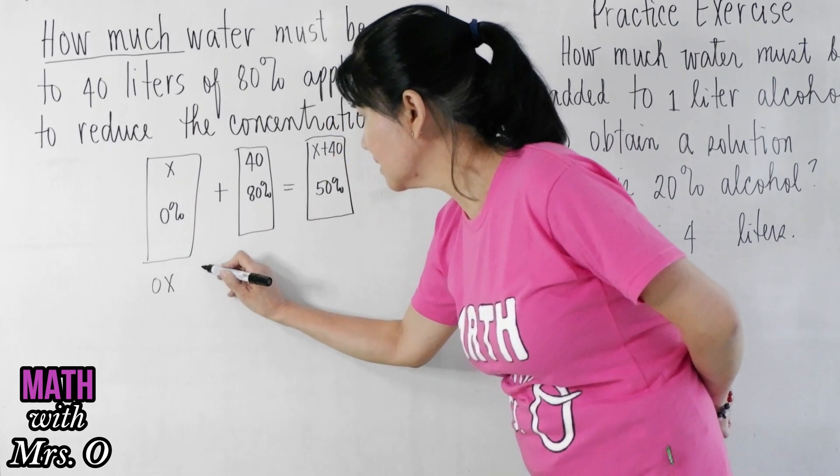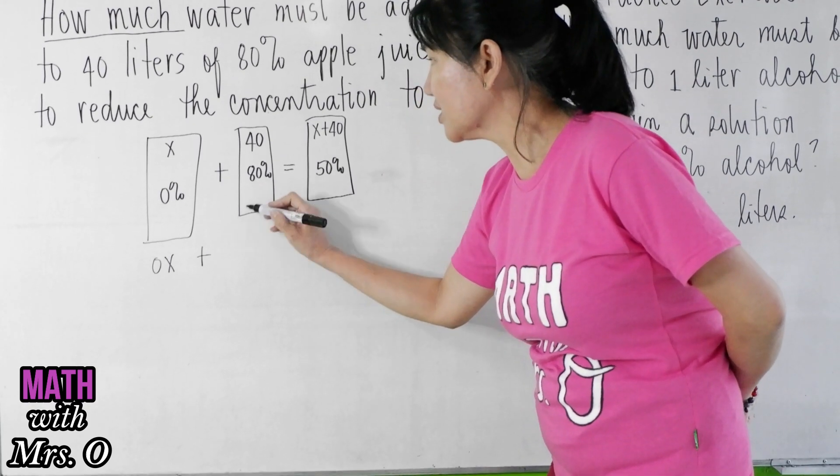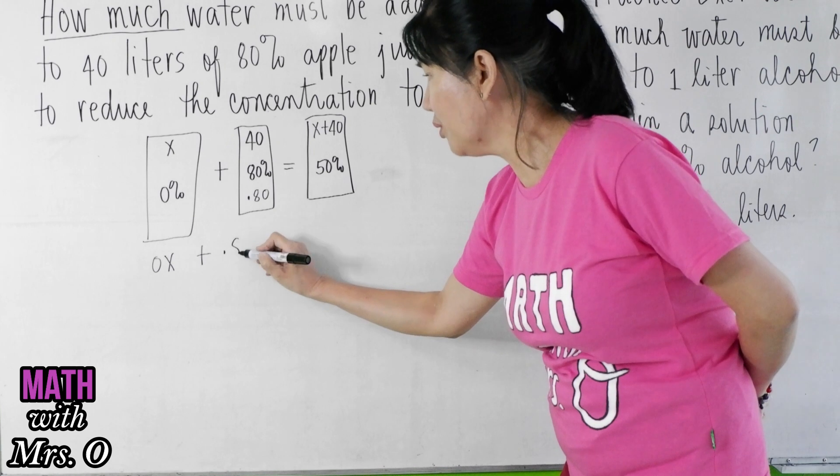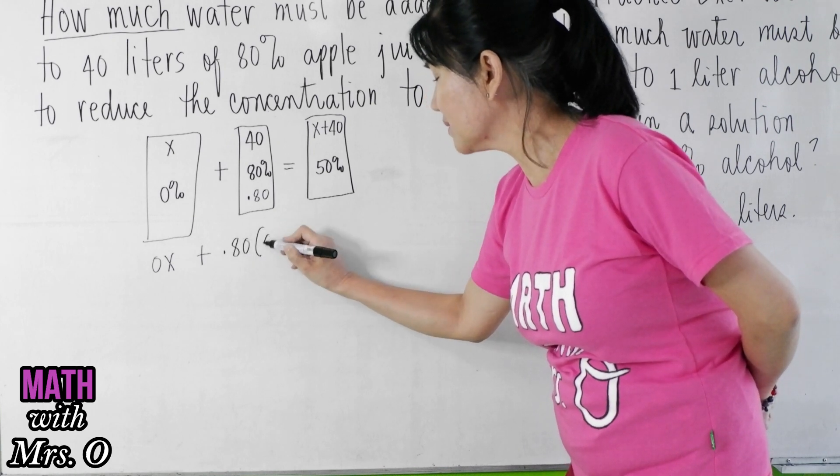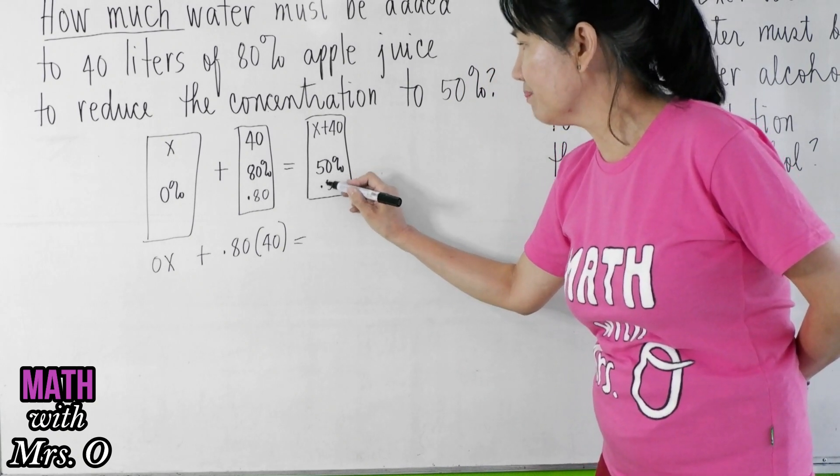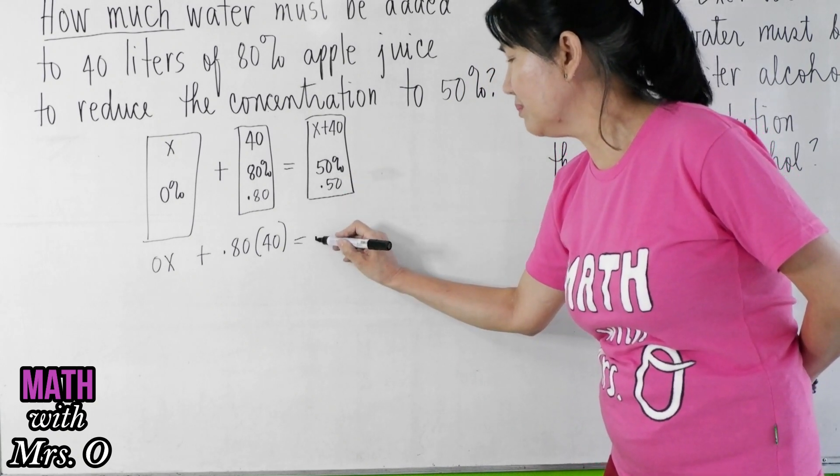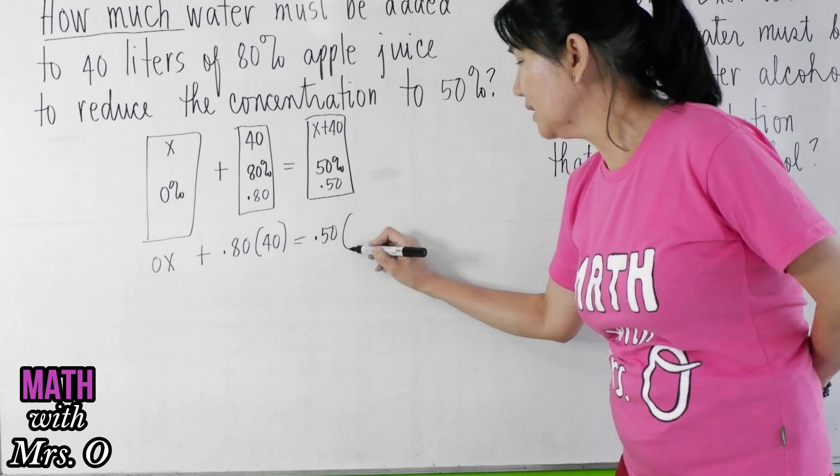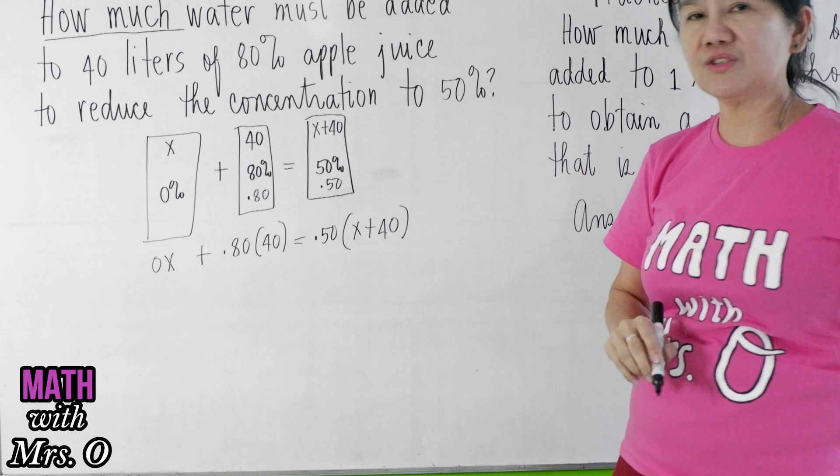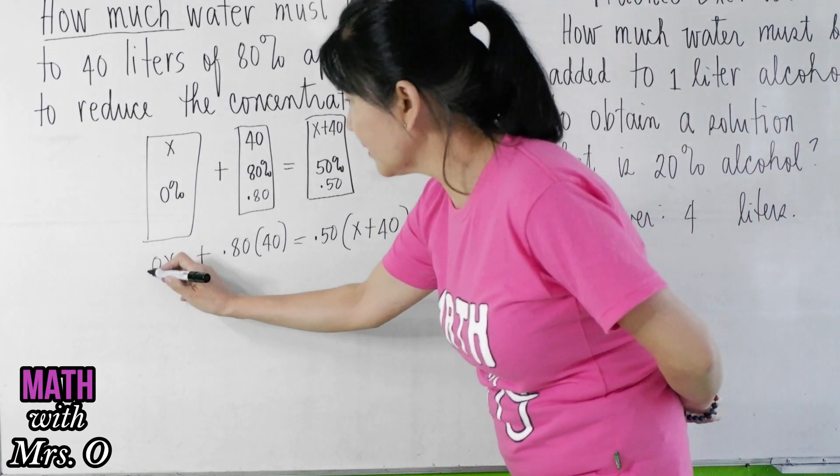So we have your 0 times x, plus 80% is 0.80 or 0.8, so that would be 0.80 times 40 equals 50% is 0.50, so that will be 0.50 times (x plus 40). That is your equation. 0x is just 0.